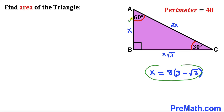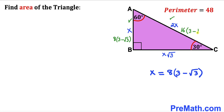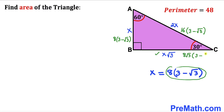Since our x value turns out to be eight times three minus square root of three, leg AB is going to be eight times three minus square root of three. The second leg is 2x, giving us 16 times three minus square root of three. The third leg is x times square root of three, giving us eight times square root of three times the quantity three minus square root of three.